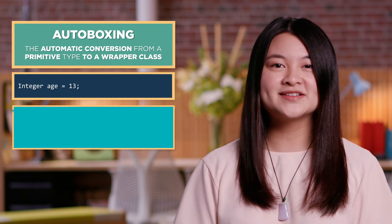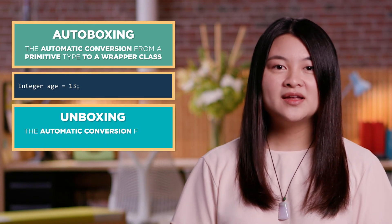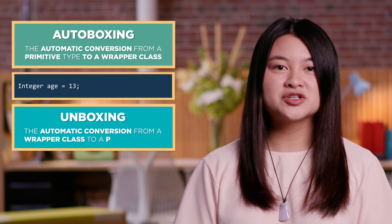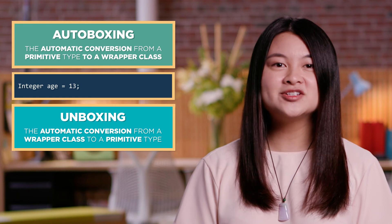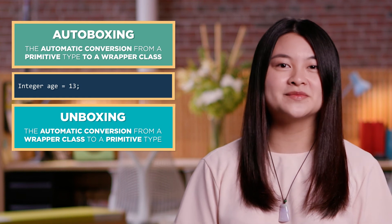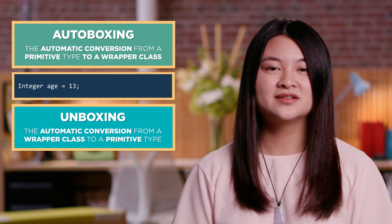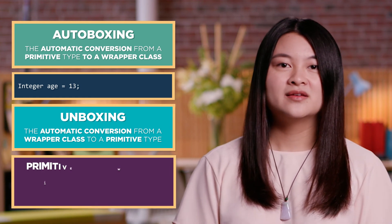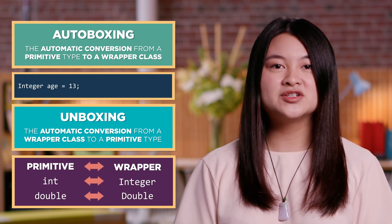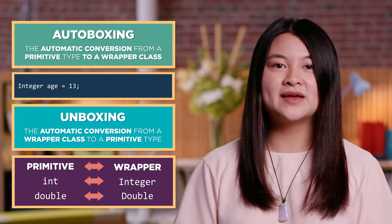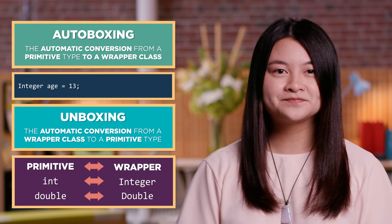Unboxing is the opposite — it is when the conversion goes the other way, and an Integer object becomes a primitive type int. These allow us to use each primitive type and its corresponding wrapper class interchangeably.